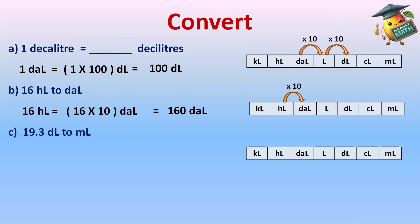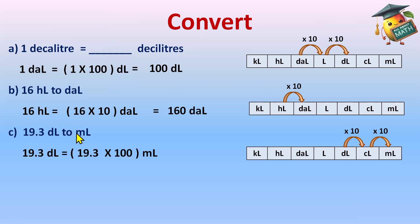Part C: we have 19.3 deciliters to milliliters. Make the chart again. We are on deciliters and need to convert to milliliters, moving forward. First step: deciliter to centiliters; second step: centiliters to milliliters. Each step multiply by 10, so there are two tens — multiply by 100. So 19.3 deciliters equals 19.3 × 100 milliliters.